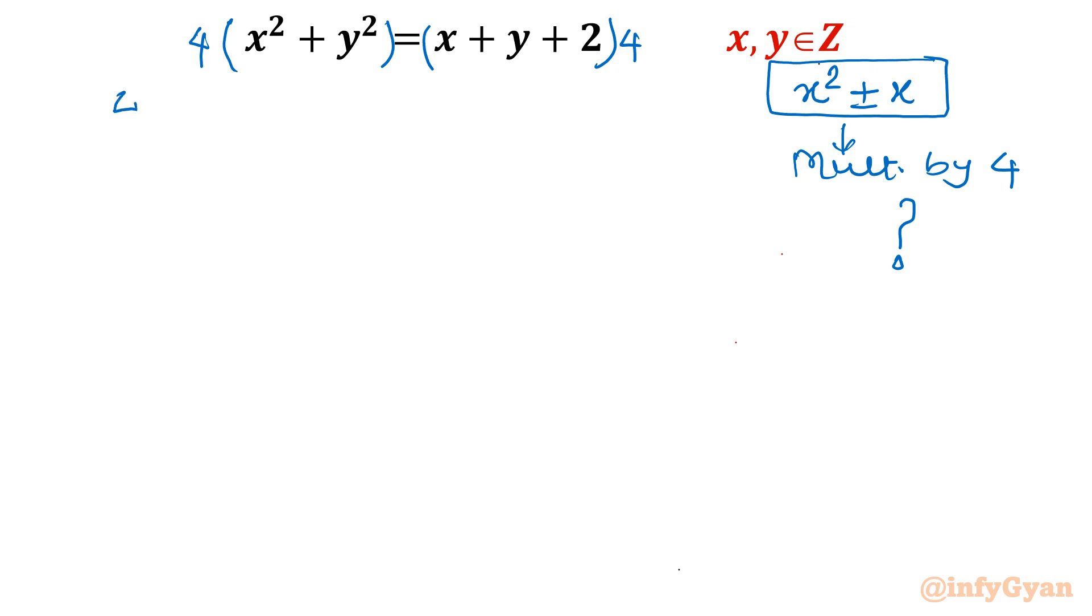Let me expand: 4x square plus 4y square equal to 4x plus 4y plus 8. Take all the variable terms to LHS. So I will write 4x square minus 4x, then 4y square minus 4y, and after some gap I will write 8.